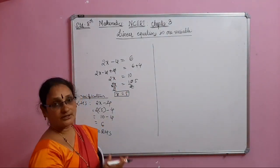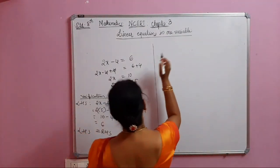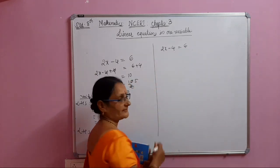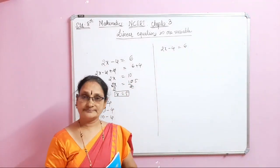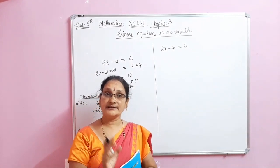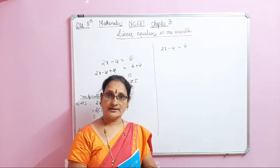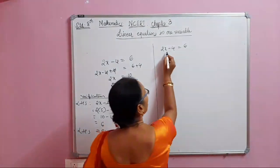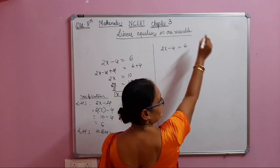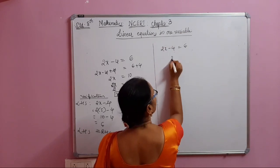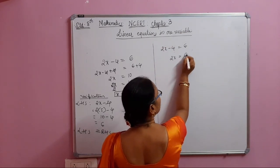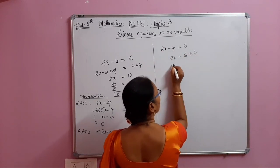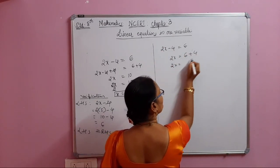That is one method. Now let me show you the transposing method for the same problem: 2x minus 4 equal to 6. This is a very trending and important method. Minus 4 is on the LHS — I send it to the RHS, and when it crosses the equals sign it becomes plus 4. So 2x equals 6 plus 4, which is 10.